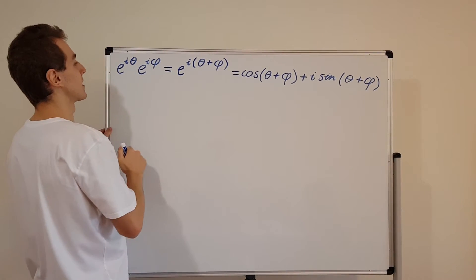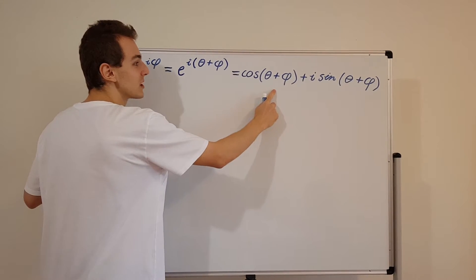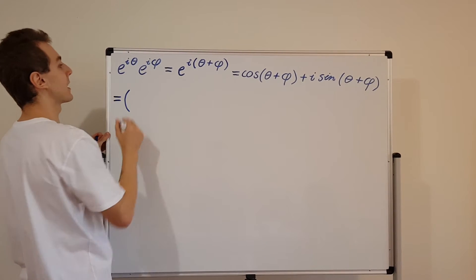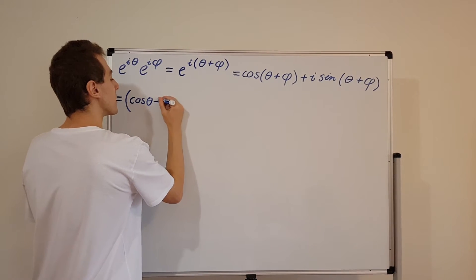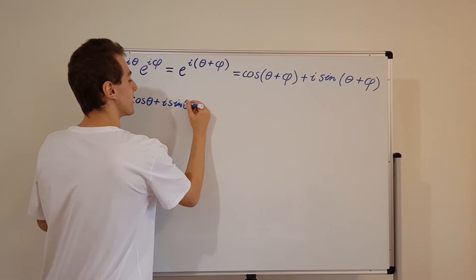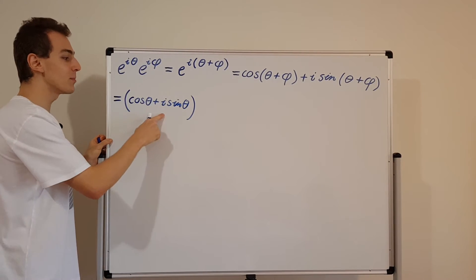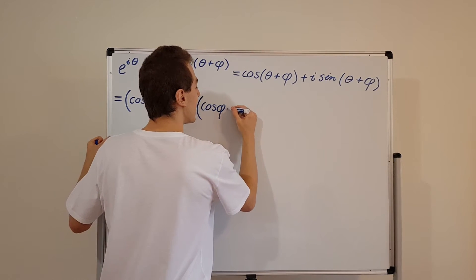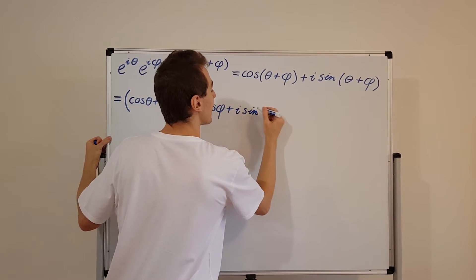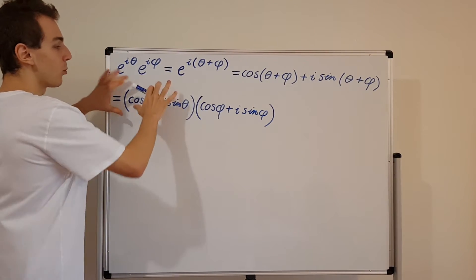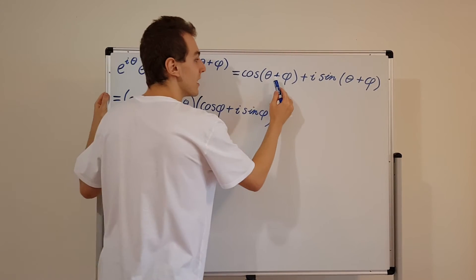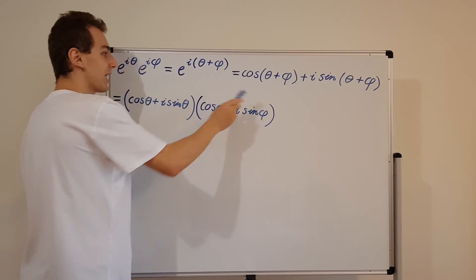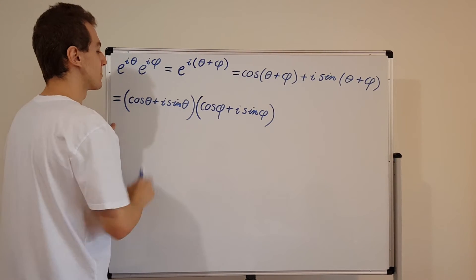Let's go ahead and manipulate this. In the same way I've written the exponential in terms of cosines and sines, I'm going to do that for both of these guys. So this is equal to, in brackets, cosine of theta plus i sine of theta — that's e to the i theta — multiplied by cosine of phi plus i sine of phi — that's e to the i phi. So taking the sum of two angles inside cosine and sine is the same as multiplying these two factors together, from the property of exponentials.